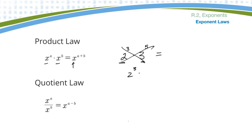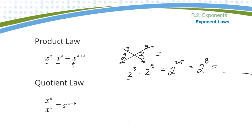How about two to the third times two to the fifth? Since the twos are the same, I can add the exponents. So this would be two to the three plus five, or we'd probably just write two to the eighth. You could simplify that more and figure out what two to the eighth is as well.